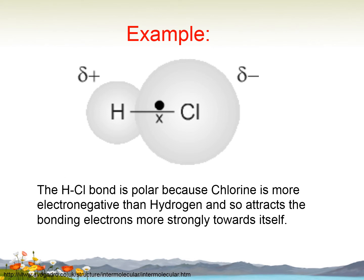The HCl bond is polar because chlorine is more electronegative than hydrogen, and so it attracts the bonding electrons more strongly towards itself. Cl is more electronegative than H, so we label it delta negative because it is more electronegative, and H is delta positive, meaning the electron cloud will mostly gather around Cl.